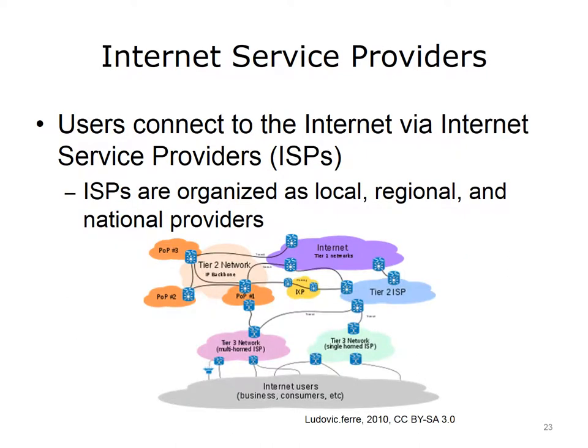Internet Service Providers, or ISPs, connect users to the Internet. Typically, a user has a contract with an ISP that allows connection to the Internet using the ISP's services. For example, a computer user at home who wants to access the Internet needs to purchase a service plan from an ISP. ISPs are organized as local, regional, and national providers, and in some cases even international providers. A Tier 1 ISP is a large national or international provider. A Tier 2, or regional ISP, connects a local ISP to Tier 1 ISPs. A Tier 3 ISP is a local Internet service provider.